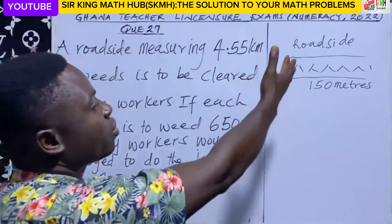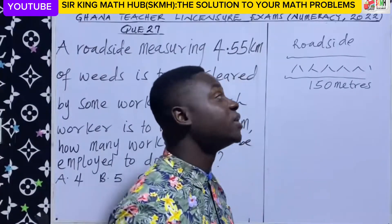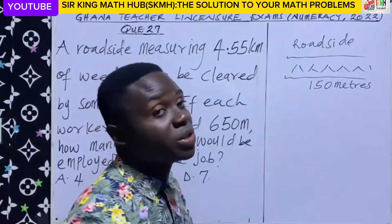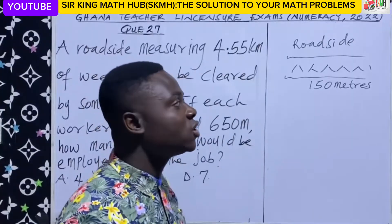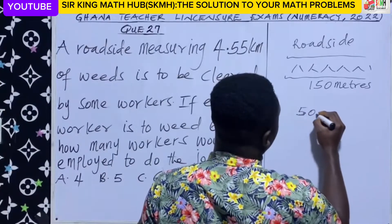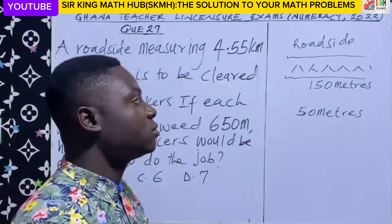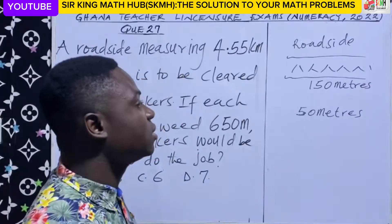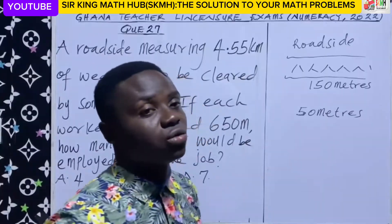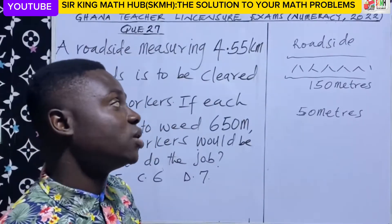Let's create a scenario. Let's say we have our roadside here with a length of 150 meters. If we want to employ some workers to clear the weeds along the roadside, and each worker is to clear 50 meters of the weed — the length of the roadside is 150 meters and each worker clears 50 meters — how many workers will be employed to do this work?